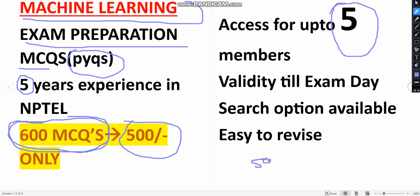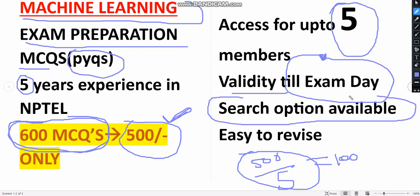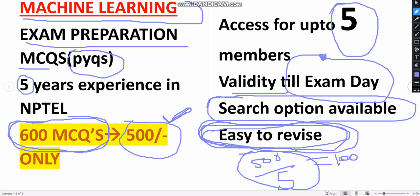If you divide 500 by 5, per person it will cost just 100 rupees. You have to form groups with classmates or friends to purchase. Only the 500 pack is available — no individual price. Validity is till the exam day, even if postponed. A search option is also available so you can navigate to any question by keyword, and it is easy to revise as it is an MCQ PDF.